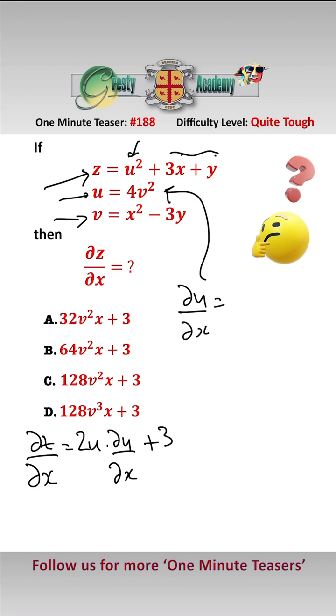So du/dx equals, well differentiating that with respect to v gives us 8v times dv/dx and then dv/dx down here we have to look at dv/dx is equal to 2x.